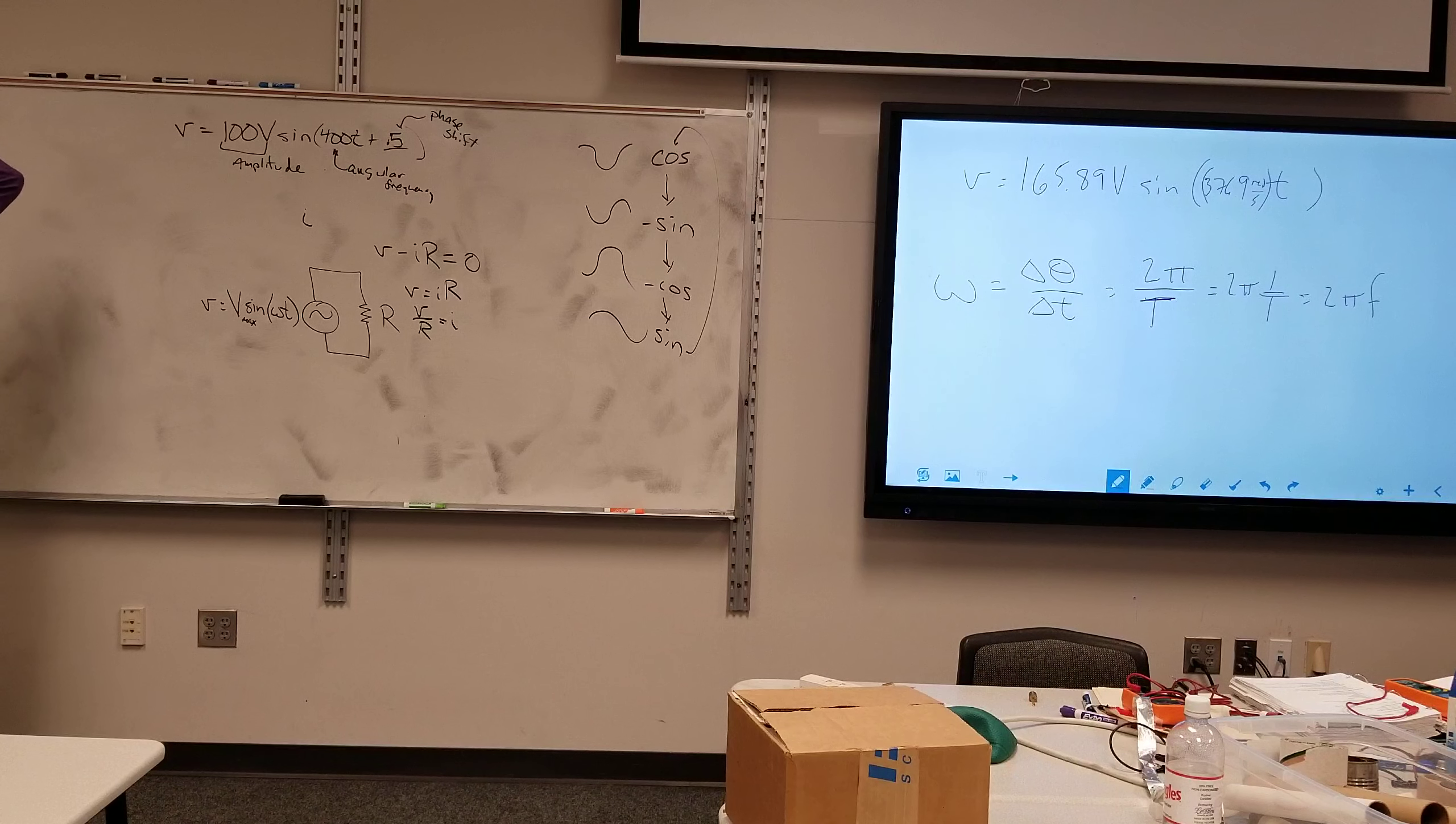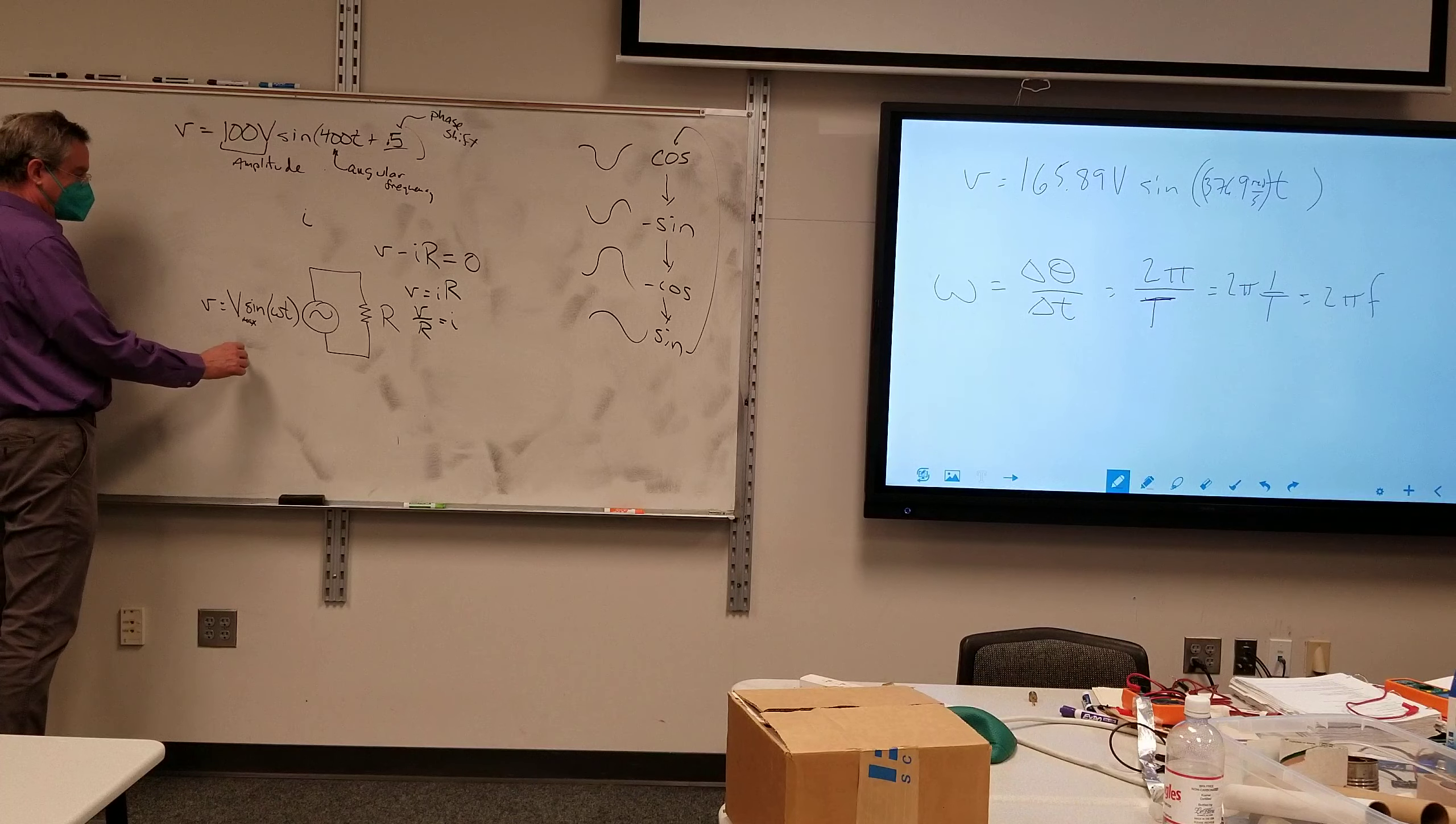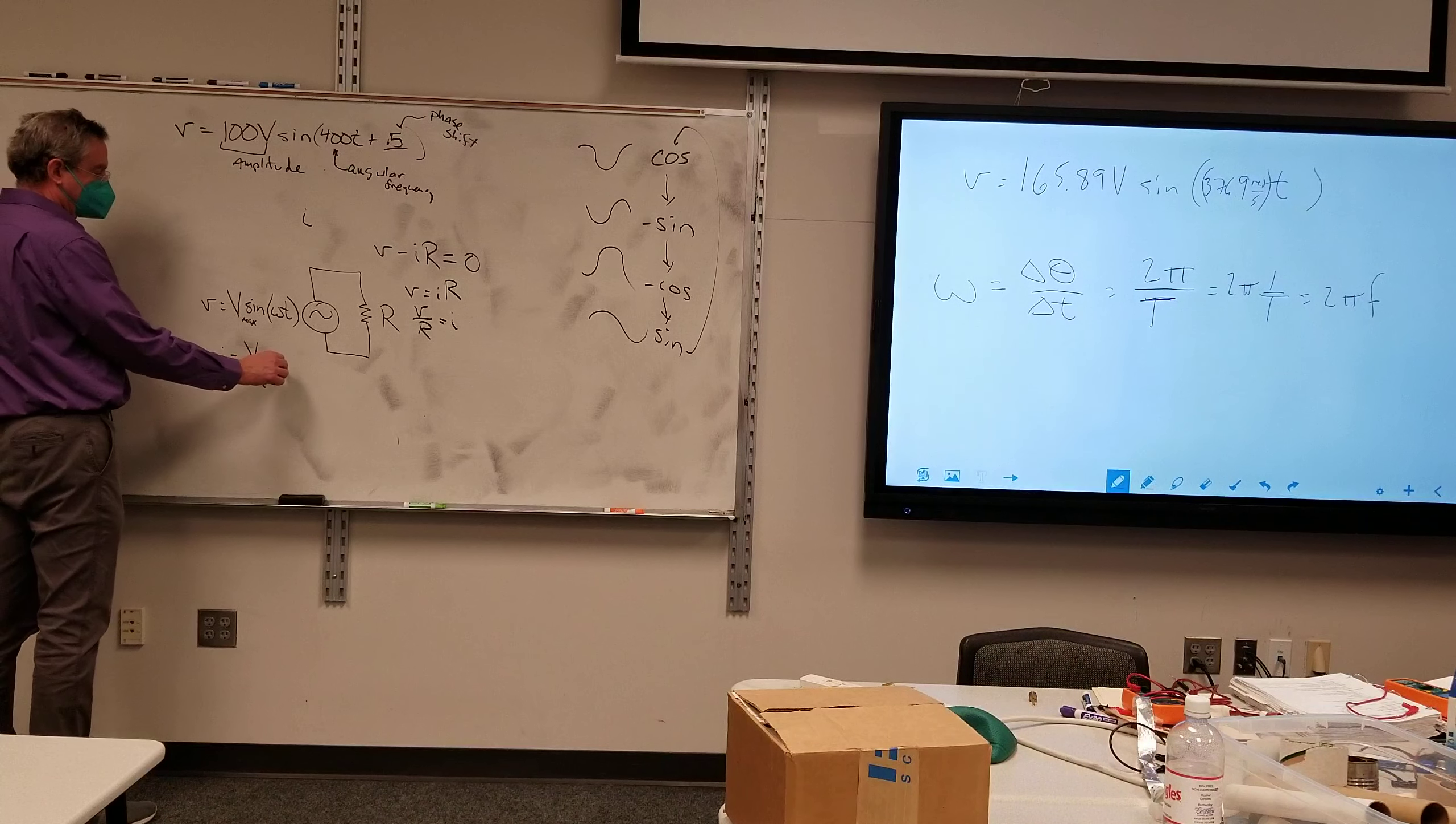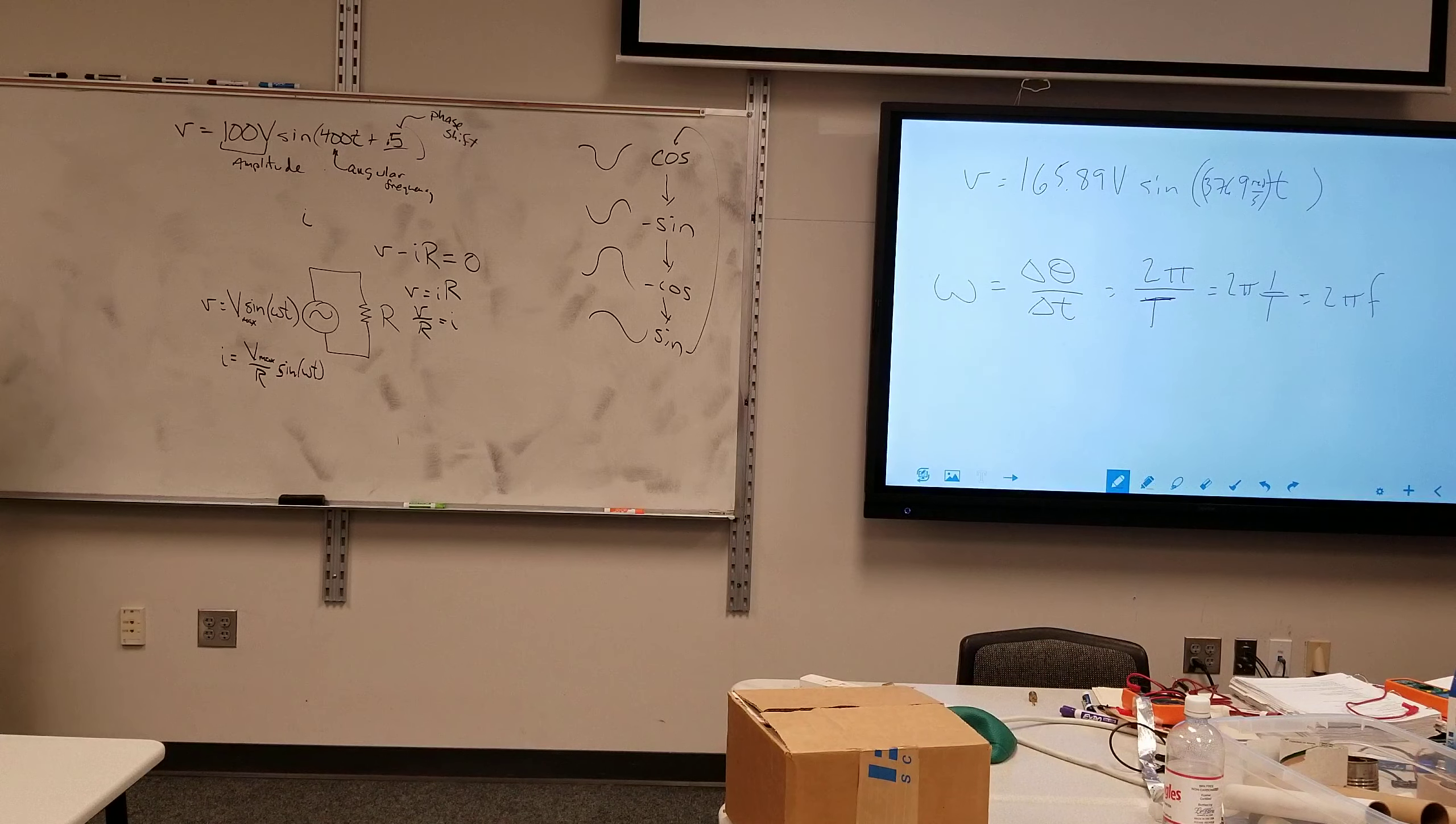The current is V divided by R. That's a huge difference from DC. But we have a formula for the current flowing through this thing. The current flowing through it would be V max divided by the resistance times the sine of omega T.